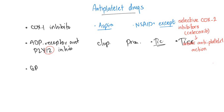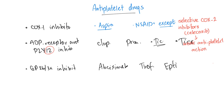Then we have the famous GP2B3A inhibitors, which include drugs such as abciximab, tirofiban, eptifibatide, and others. And today's topic is the phosphodiesterase inhibitors — these are the famous dipyridamol as well as cilostazol. Crazy names.